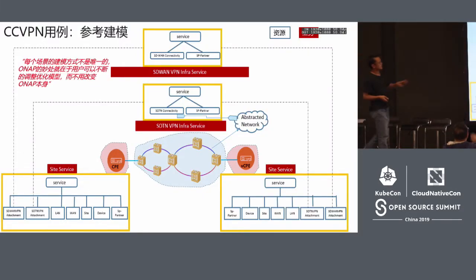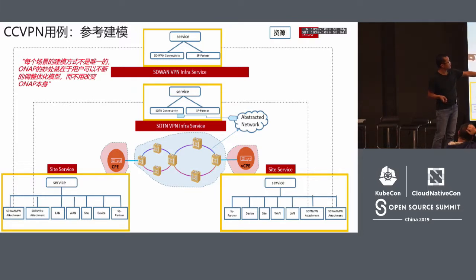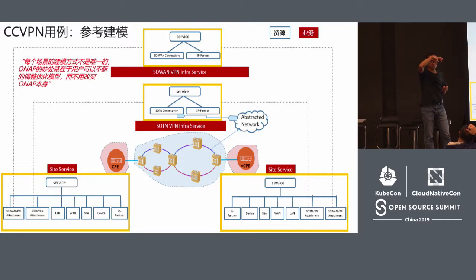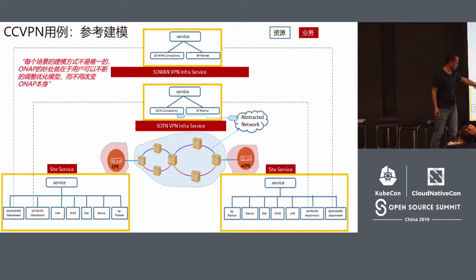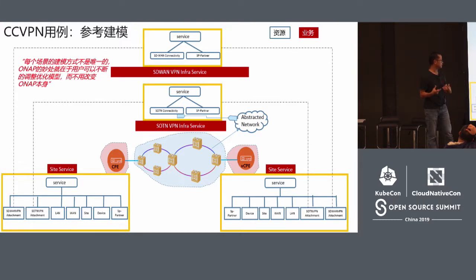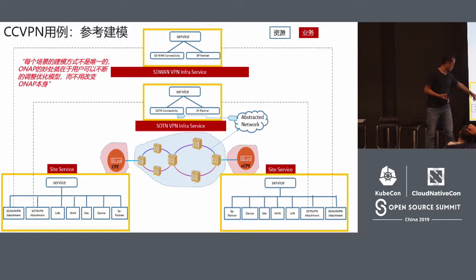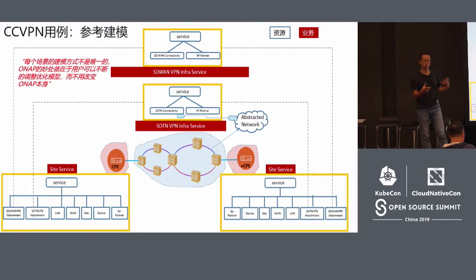Here are some details, like CCVPN. In the middle, first you have the business, and then you have two stations. Below the business you have resources — for example, for SD-WAN, you have a vCPE board, SDN connecting, and SODN. And then you reassemble it.